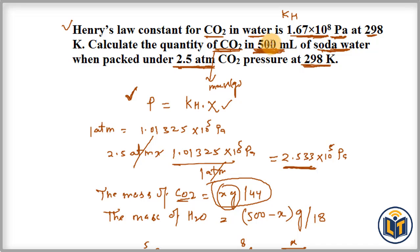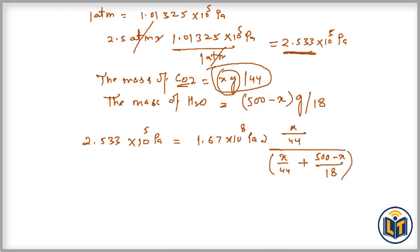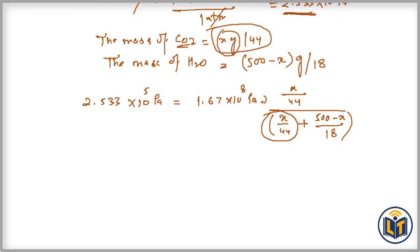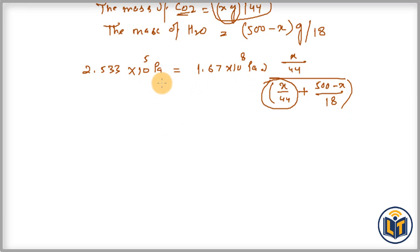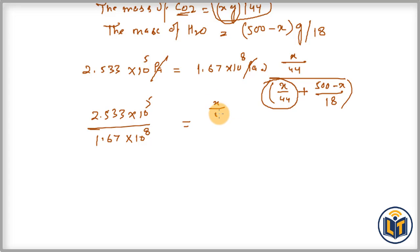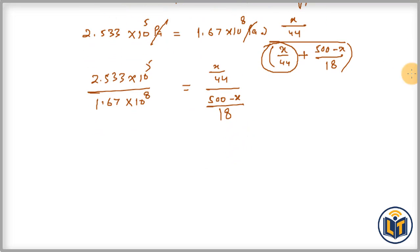Since 500 ml of solution means 500 grams is essentially water, the solution is quite dilute, so the quantity of CO₂ is negligible compared to water. Therefore, the moles of CO₂ in the denominator (x/44) can be ignored, simplifying the mole fraction to (x/44) / (500/18). Transferring KH to the left side: 2.533 × 10⁵ / 1.67 × 10⁸ = x/44 / (500/18).